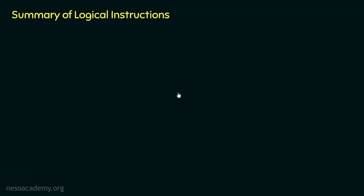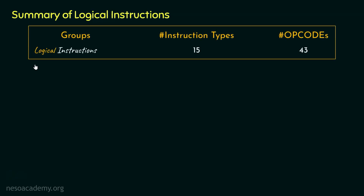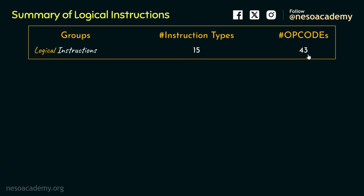Now if you remember, when we started learning about the logical group of instructions, I told you there are 15 different instruction types. And in those 15 types we actually have learnt about 43 different opcodes. Today let me prove that to you.